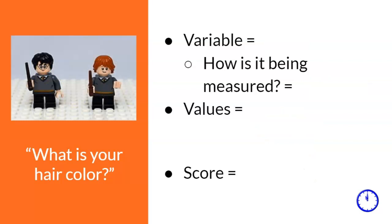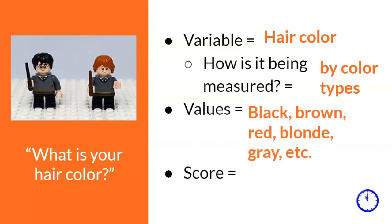Let's do one more practice example. But now, I want you to pause the video here to write down your answers before I review the example. Okay, are you ready? First, the variable is hair color. Second, hair color is being measured by the different types of color or the categories of hair color. Third, these categories, these values, are black, brown, red, blonde, gray, and so forth. Finally, what is your score on hair color? My score is black.